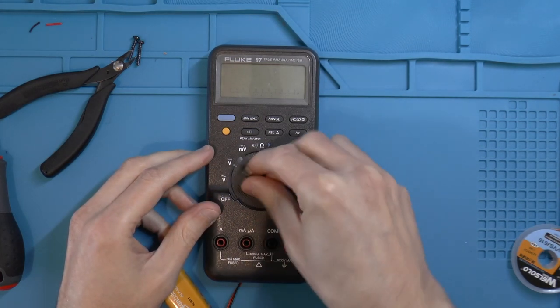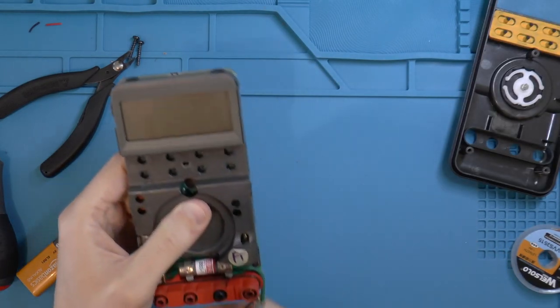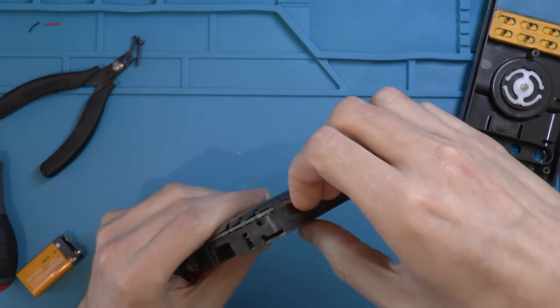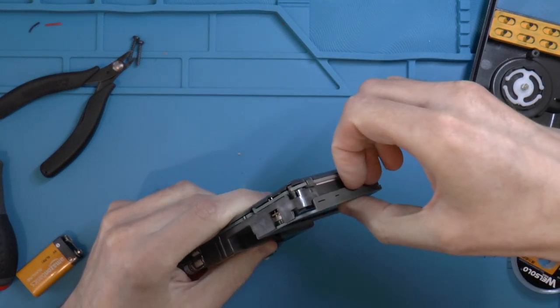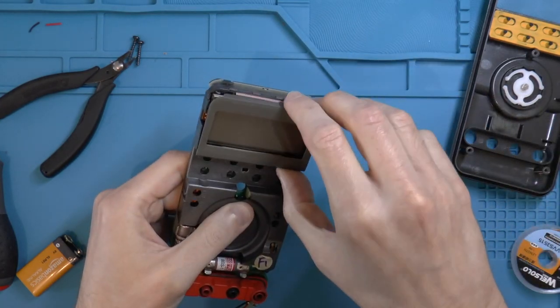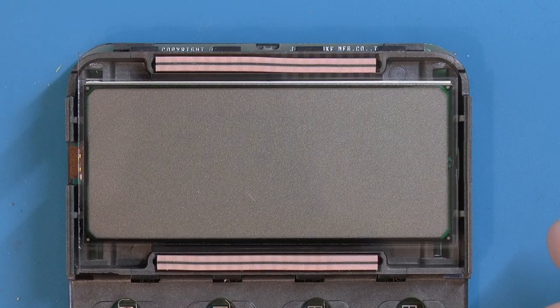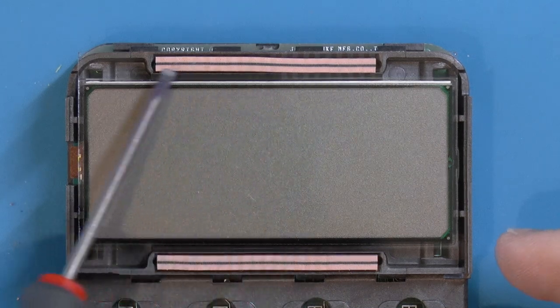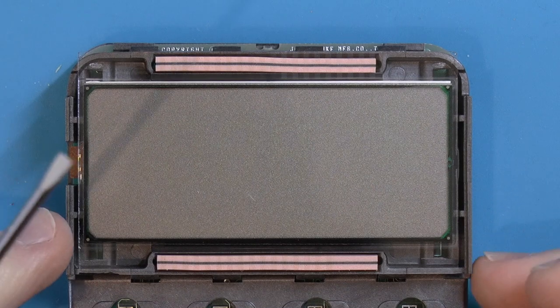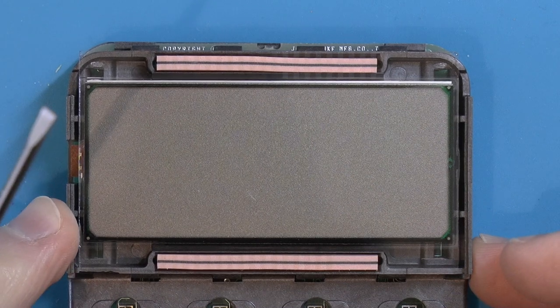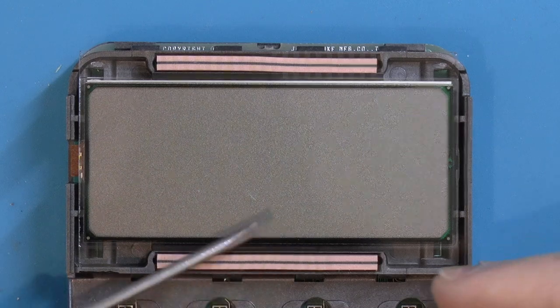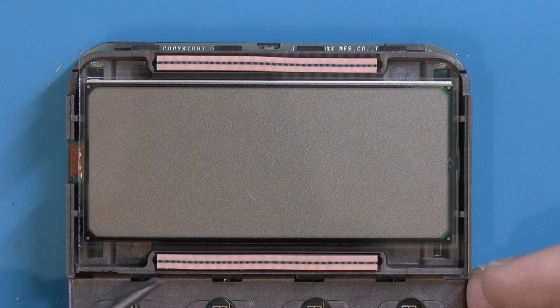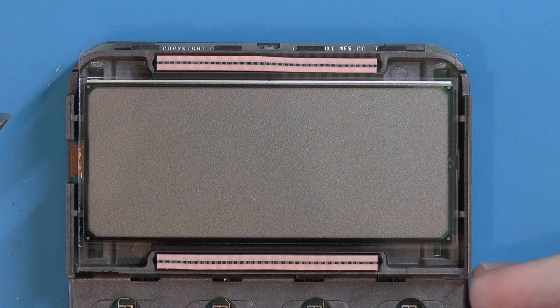The way to access the display is by taking this bezel off the top which just clips in place here. And this is the issue, these pink strips here, these are elastomeric connectors also known as zebra strips and they conduct the signal from the board to the display. So they're not conducting properly, so I'm going to clean those up and hopefully restore function.